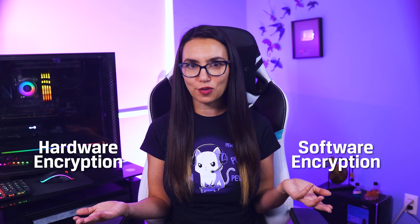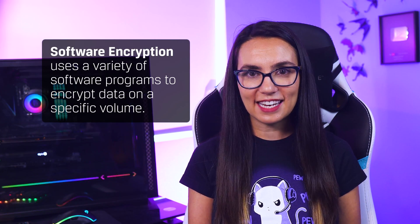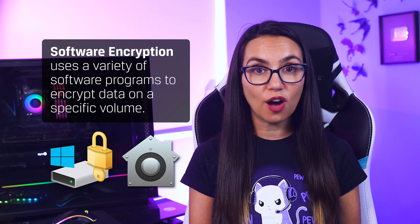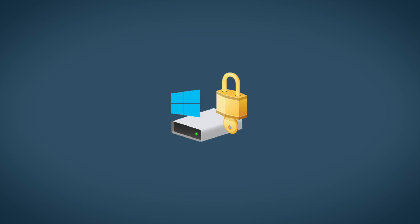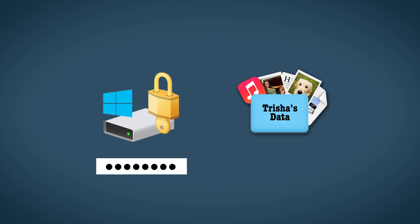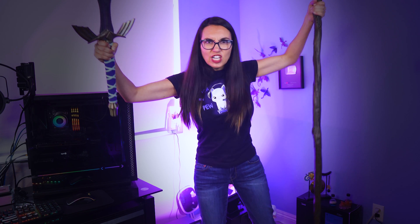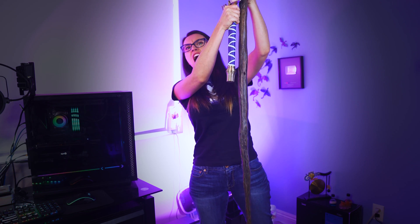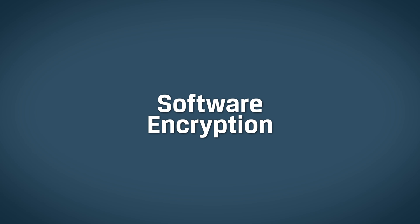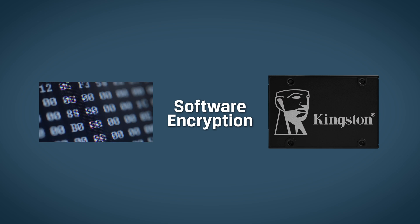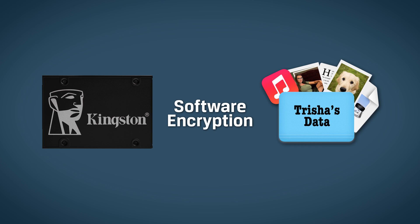There are two main types of encryption: software encryption and hardware encryption. Software encryption, as the name suggests, uses a variety of software programs to encrypt data on a specific volume. When a drive is encrypted, the user will create a passphrase that will unlock a key giving access to the unencrypted data on that device — no key, and you shall not pass. Software encryption acts as the middleman, encrypting data as it's written to the drive.